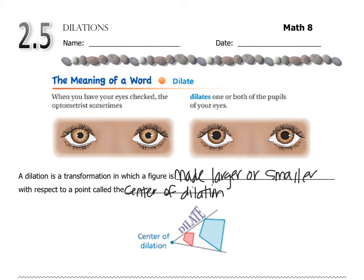Now for vocabulary words, dilations, when it gets bigger, it's called an enlargement. When it gets smaller, it's called a reduction.